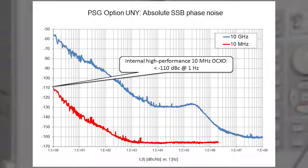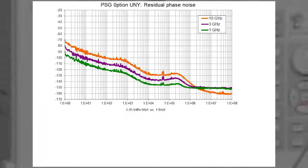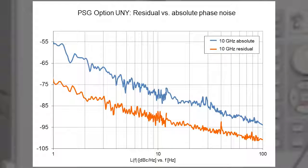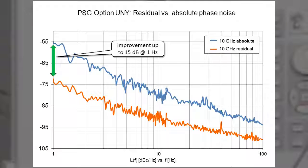However, if you have a 10 megahertz reference that is cleaner, you can improve the PSG phase noise even more. In the PSG data sheet, we provide plots and specifications for residual phase noise. This 10 gigahertz plot illustrates the potential phase noise performance that the PSG can support if you provide an ideal, extremely clean 10 megahertz reference.